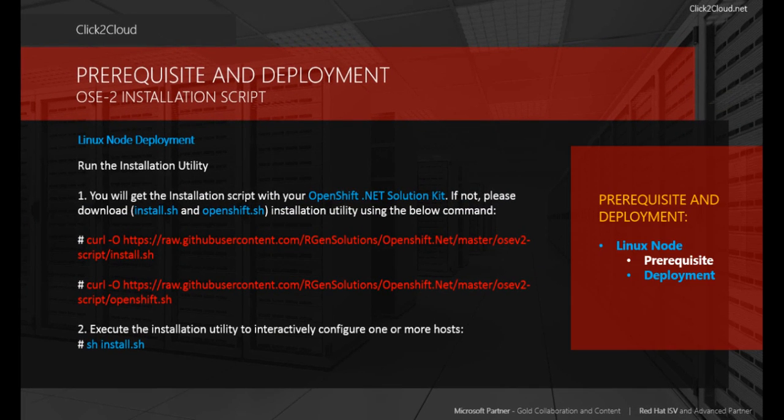You need the same installation script as we used in the broker to install the node. You will get the installation script with your OpenShift.NET solution kit. If you do not have it, you can directly download it using the curl command as displayed on the screen. Let's see how it works.